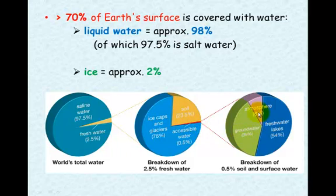This is then divided into water in the atmosphere, in freshwater lakes, and groundwater. So when you look at it that way, there's not a lot of water that's actually available to us.